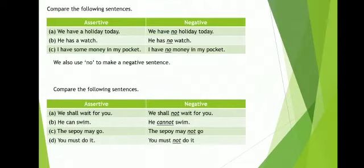We can also use 'not' to make a negative sentence. Now compare the following sentences — assertive and negative again. We shall wait for you. Negative: We shall not wait for you. He can swim. He cannot swim. The sepoy may go. The sepoy may not go. You must do it. You must not do it.